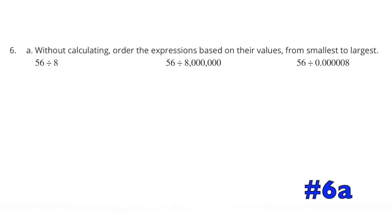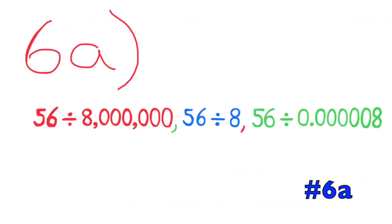Problem 6a: Without calculating, order the expressions from smallest to largest: 56 divided by 8, 56 divided by 8 million, and 56 divided by 8 millionths. From smallest to largest: 56 divided by 8 million, then 56 divided by 8, then 56 divided by 8 millionths — because 8 millionths goes into 56 many more times than 8 or 8 million does.